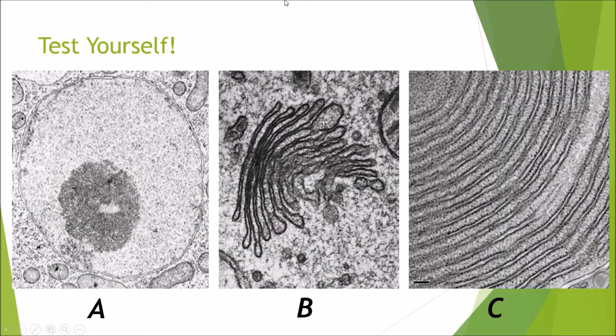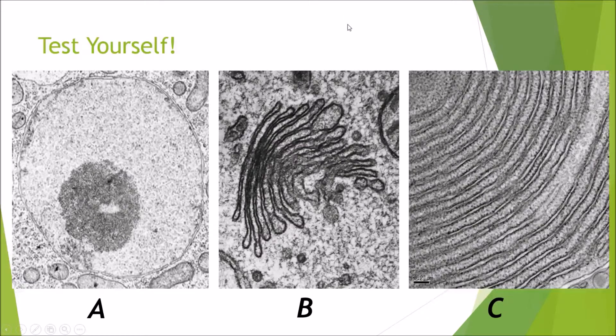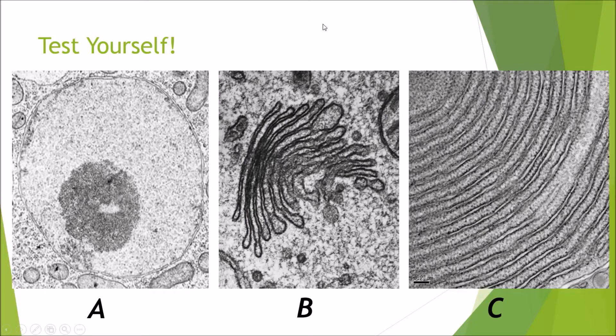So now here is a quick test yourself area. I am going to ask you a couple questions, and you are going to choose from A, B, or C about which organelle is what it is. So which of these A, B, or C is the Golgi apparatus? The answer? B. As we can see, it is a set of flattened discs.